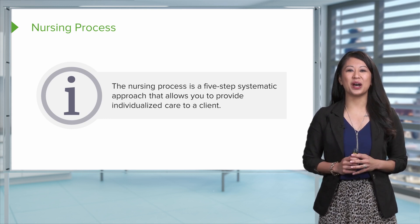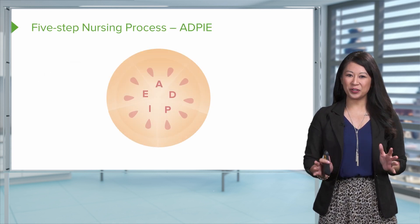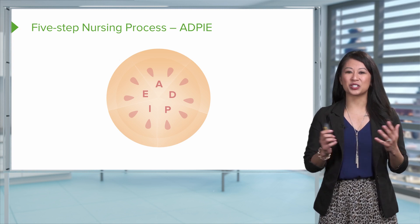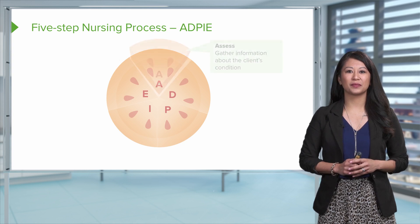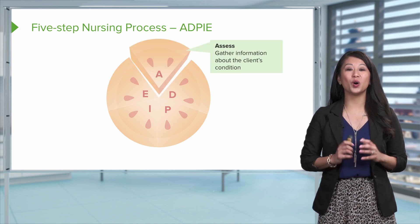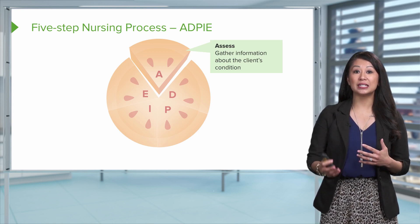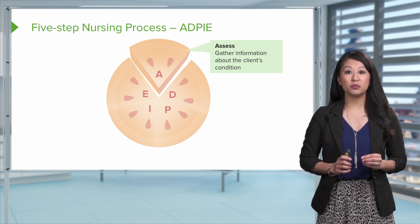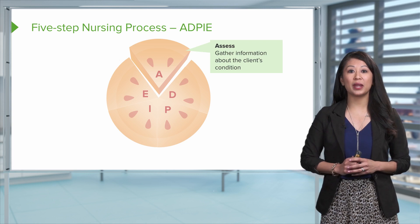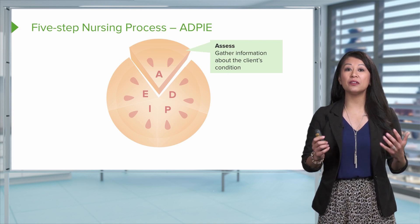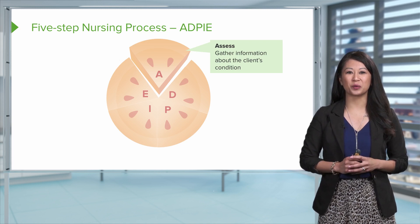We're briefly going to talk about these steps first, just to introduce the nursing process to you. And of course, we're going to use a PIE image — it's only fitting. So let's take a look at the first piece of the PIE, called assessment. This is where we gather information about the client's condition — through a head-to-toe assessment, gathering information from our patient, the medical records available, and even the family members around our patients.